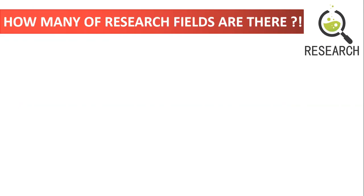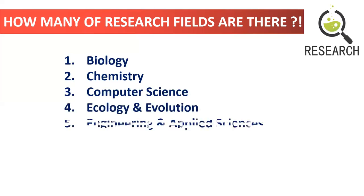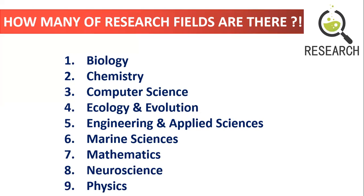I narrowed down nine research fields in OIST, because many students are always asking me whether their background — computer science, mathematics, or other fields — makes them eligible to apply. So your answers are here. The nine fields are: biology, chemistry, computer science, ecology and evolution, engineering and applied science, marine sciences, mathematics, neuroscience, and physics.